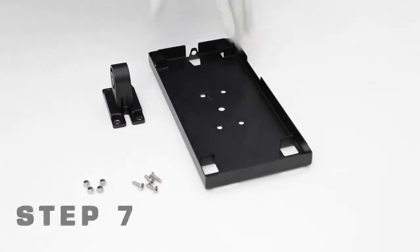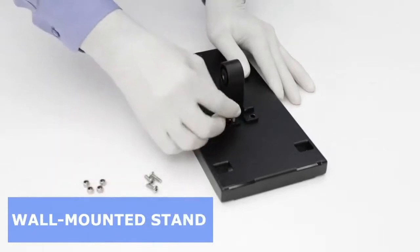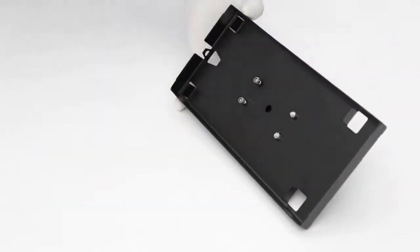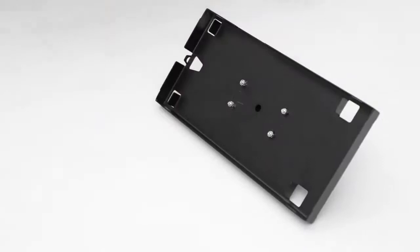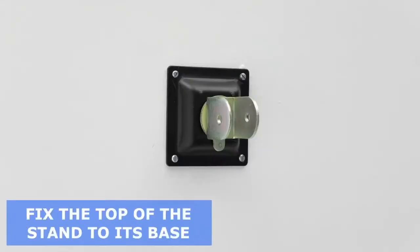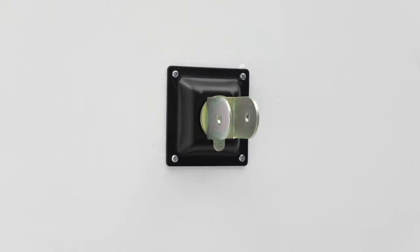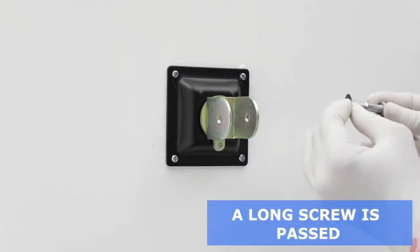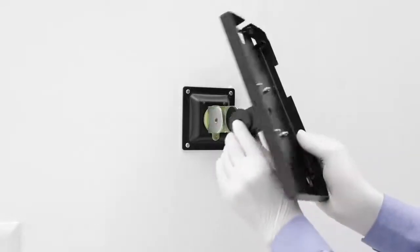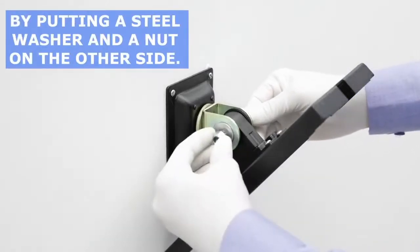Step 7: Take the base of the lockable frame and attach it to the top part of the wall-mounted stand using the 4 small screws and nuts. Step 8: Fix the top of the stand to its base using two plastic washers on both sides of the base on the inside and then a long screw is passed through the hole present in the wall-mounted stand. Step 9: Tighten the long screw using the spanner by putting a steel washer and a nut on the other side.